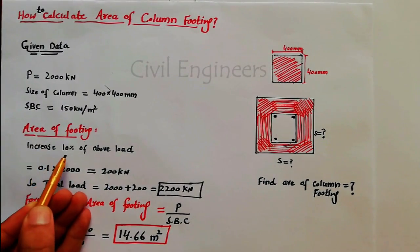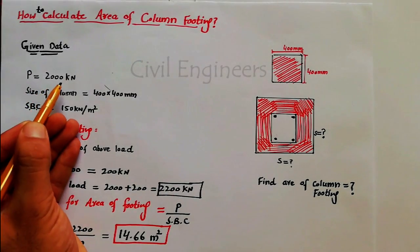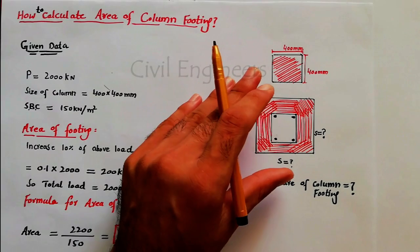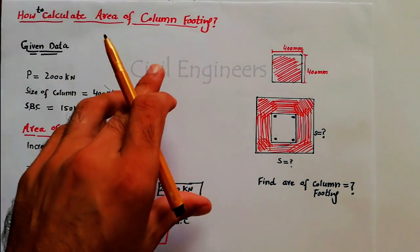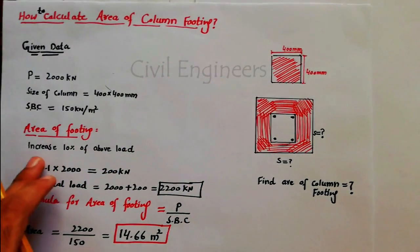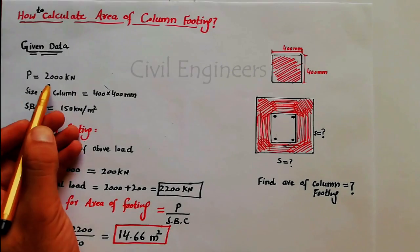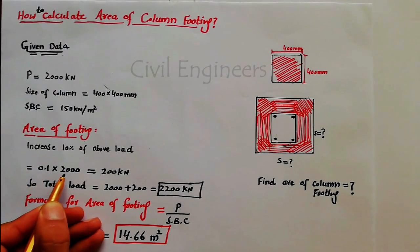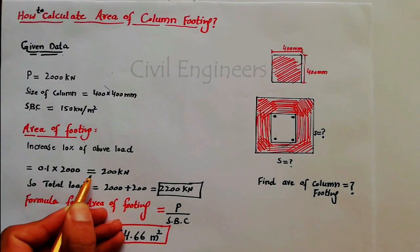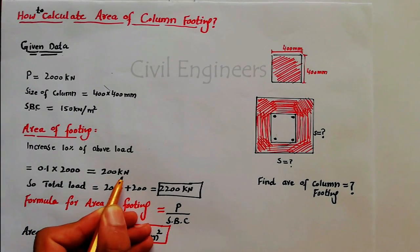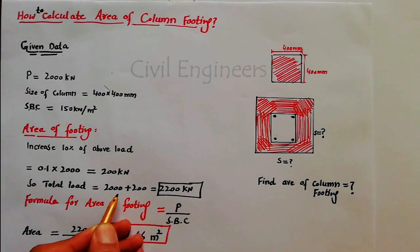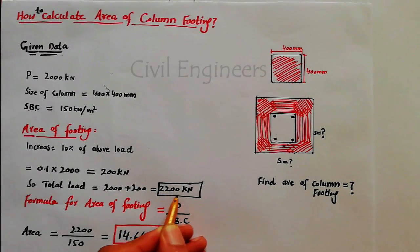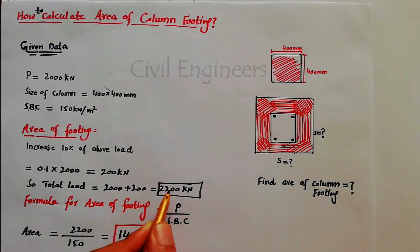First, I will increase the load by 10% to account for the self-weight of the footing as a factor of safety. 10% of 2000 kilonewtons equals 0.1 multiplied by 2000, which gives 200 kilonewtons. So the total load is 2000 plus 200, which equals 2200 kilonewtons.